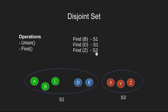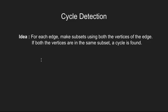Now that we have seen how union and find works, let's see how we can use them to detect a cycle in an undirected graph. So the idea that we are going to use is that for each unvisited edge, we make subsets using both the vertices of the edge. If both the vertices belong to the same subset, we say that we have found a cycle.